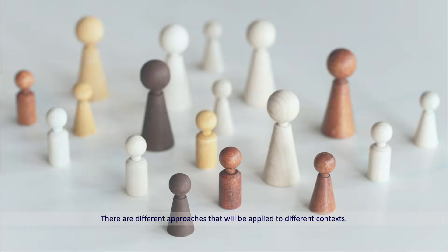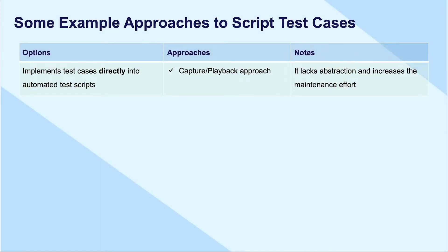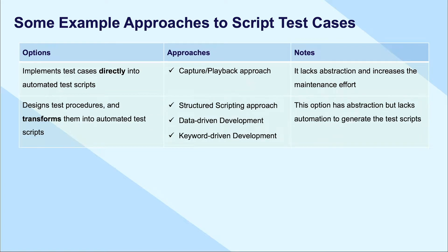There are different approaches that will be applied to different contexts. For example, the test automation environment implements test cases directly into automated test scripts. This option is the least recommended as it lacks abstraction and increases the maintenance load. The test automation environment designs test procedures and transforms them into automated test scripts. This option has abstraction but lacks automation to generate the test scripts.